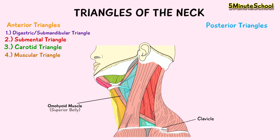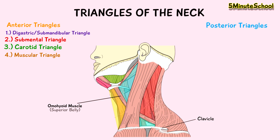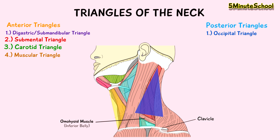In the posterior triangle of the neck we can see another two triangles. The inferior belly of the omohyoid muscle extends into the posterior triangle and divides it into a further two triangles: the occipital triangle and the subclavian triangle. The subclavian triangle is also known as the supraclavicular triangle.